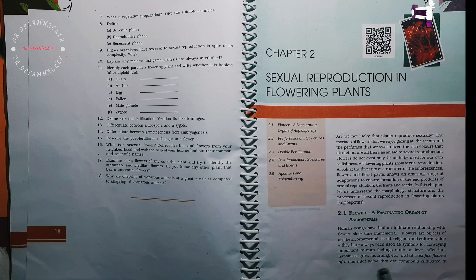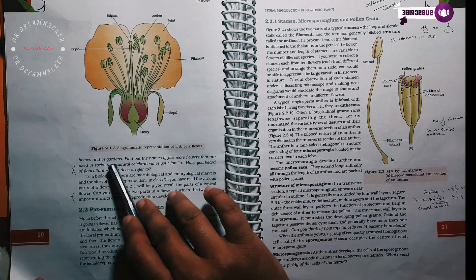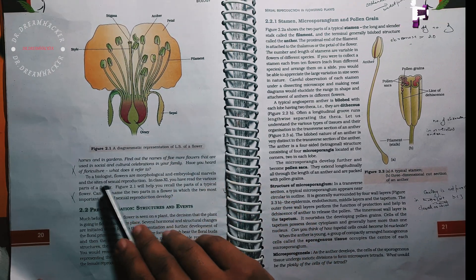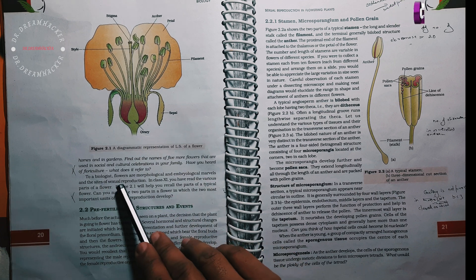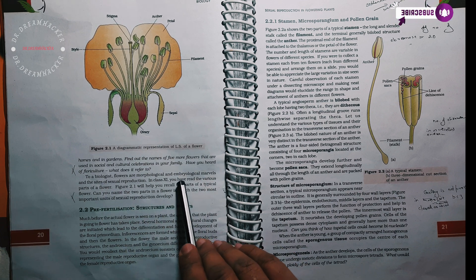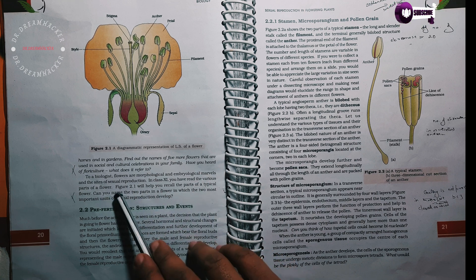List at least 5 flowers of ornamental value that are commonly cultivated at homes and in gardens. To a biologist, flowers are morphological and embryological marvels and the sites of sexual reproduction. In class 11, you have read the various parts of a flower. Figure 2.1 will help you recall the parts of a typical flower.